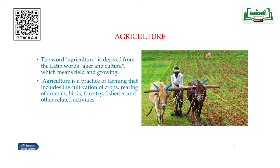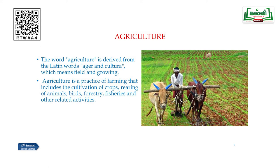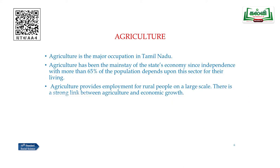The word agriculture is derived from the Latin words 'ager' and 'cultura', meaning field and growing. Agriculture is the practice of farming that includes the cultivation of crops, rearing of animals, birds, forestry, fisheries and other related activities. Agriculture is the most major occupation in our state Tamil Nadu. It has been the mainstay of the state's economy since independence, with more than 65% of the population depending upon agriculture for their living. Agriculture provides employment for rural people on a large scale and has a strong link to the state's economic growth.